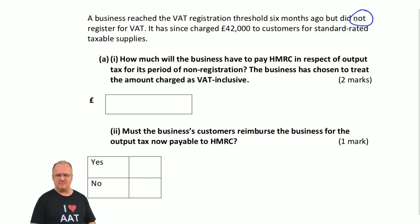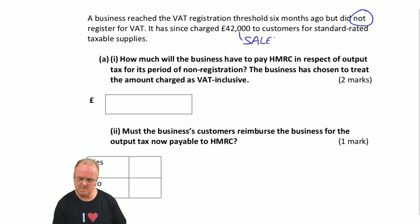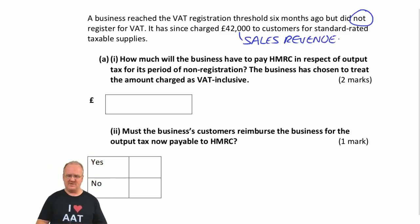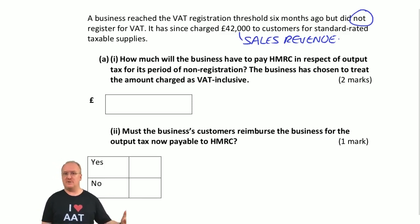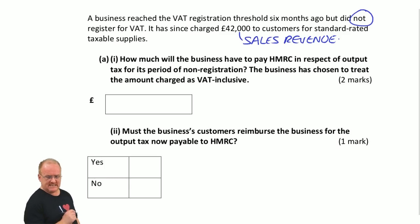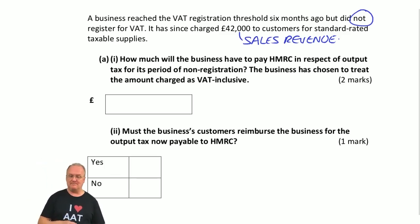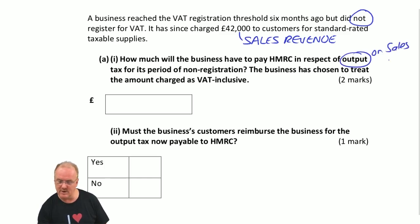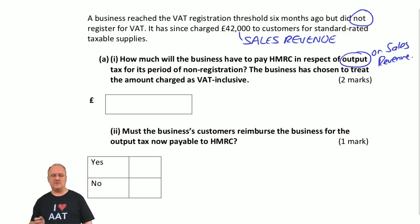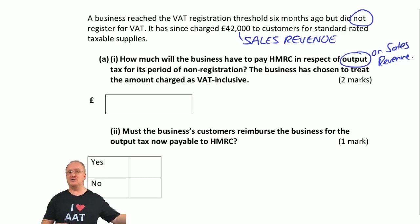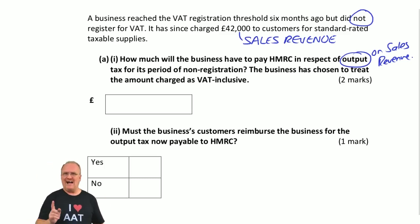It has since charged £42,000 to customers for standard-rated taxable supplies. So customers have been charged £42,000. This business is not registered for VAT but it should have been. The question says: how much will the business have to pay HMRC — Her Majesty's Revenue and Customs — in respect of output tax, on sales revenue, for its period of non-registration? Well, that all rather depends on how that £42,000 is to be viewed.